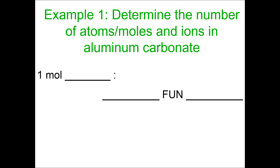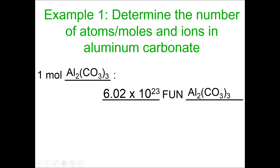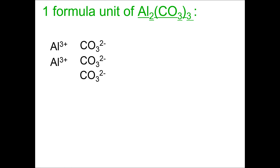When it comes to formula units, we use the term 'formula units' whenever we are dealing with ionic compounds — not molecules. So if I had one mole of aluminum carbonate, that would be equivalent to 6.02 × 10²³ formula units of aluminum carbonate. This is Avogadro's number, and we can use it anytime we're talking about atoms, molecules, or formula units, as long as the formula behind the unit correctly corresponds.